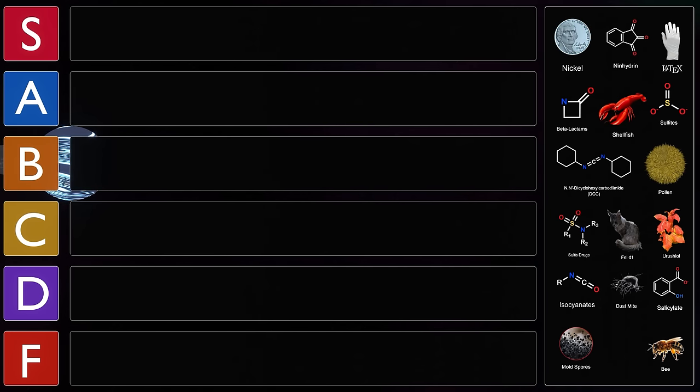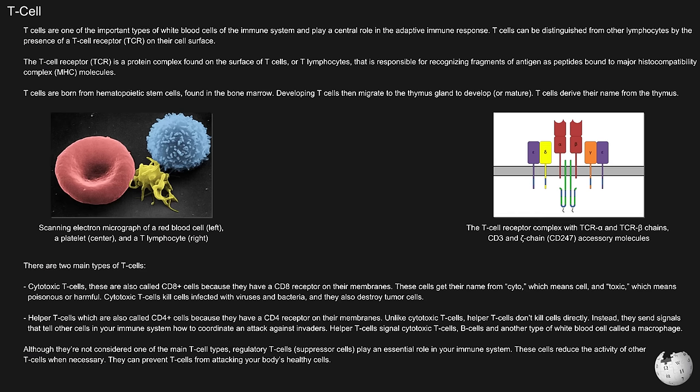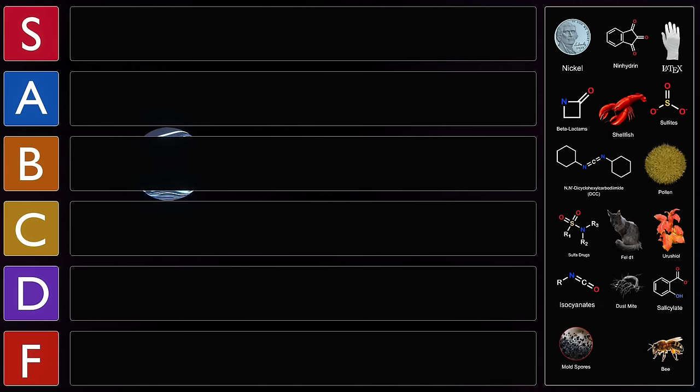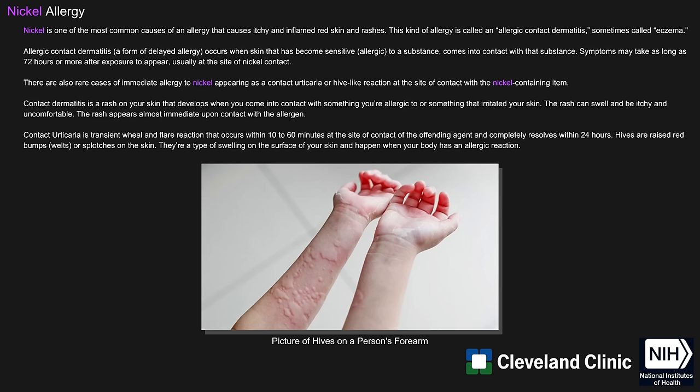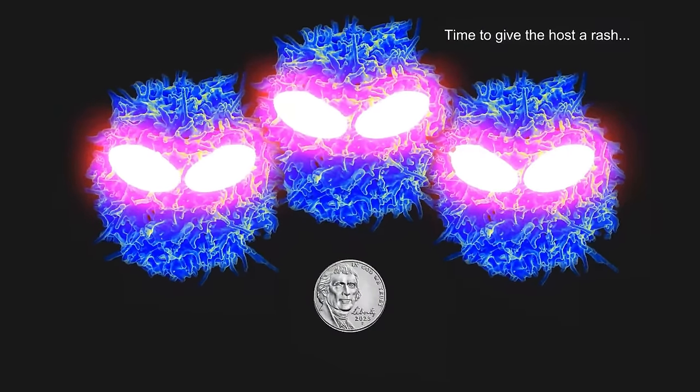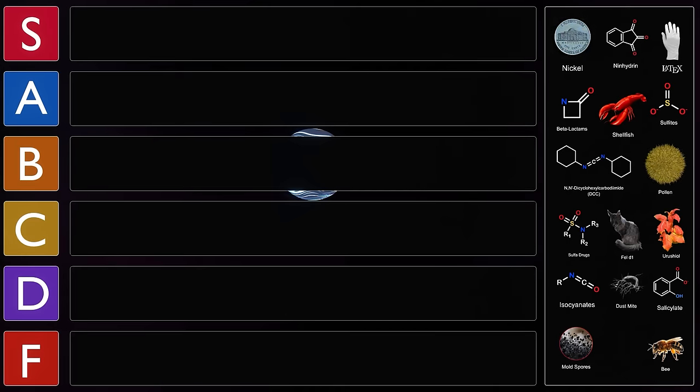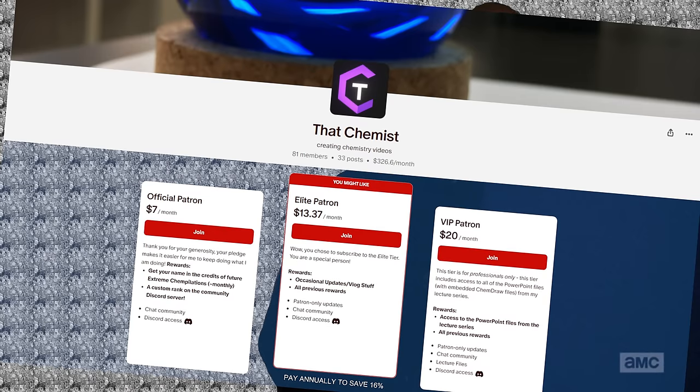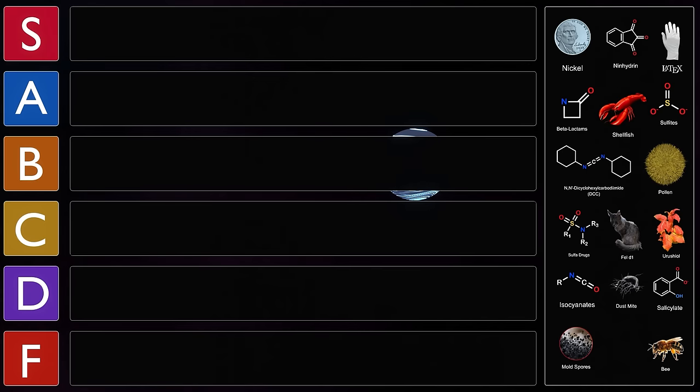The exposure of the skin to nickel causes the nickel to be presented to the T-cells, which will become stimulated and duplicate themselves, eventually reaching a threshold, causing the skin to develop a rash. Nickel allergies usually take the form of nickel allergy contact dermatitis, which causes a rash that appears bumpy or scaly. While the exact cause of nickel allergy is unknown, it is known that nickel is recognized by the immune system as a harmful substance.